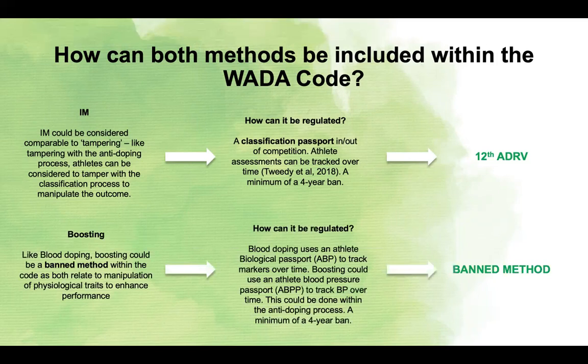When it comes to boosting, as previously stated, it could be compared to blood doping, which is a banned method. Blood doping uses an athlete biological passport to track markers of doping over time — and this has been a real game changer in the anti-doping system. Boosting, therefore, can use an athlete blood pressure passport to track blood pressure over time. This could be implemented within the anti-doping process, so blood pressure could be taken alongside blood and urine for athletes with spinal cord injuries. Because it is all data and does not need to be stored as a sample, it is actually quite cost effective. Athletes could then receive a four-year ban, so like blood doping, boosting could become a banned method going forward.